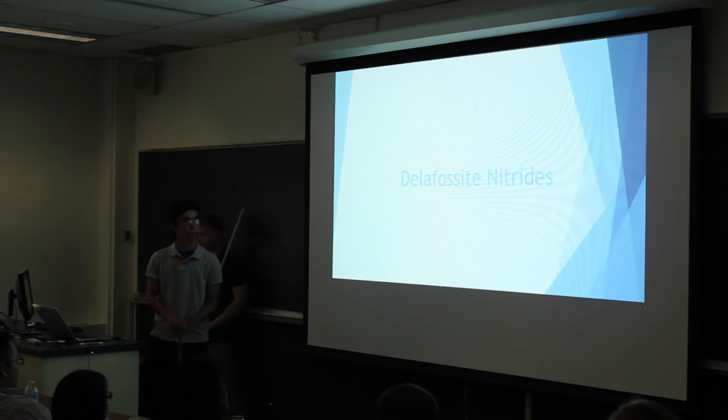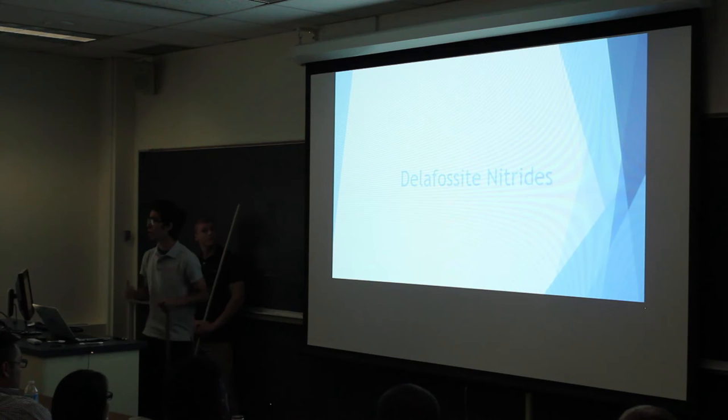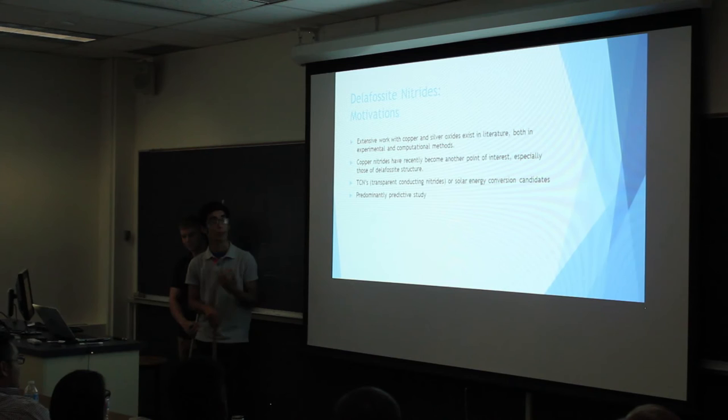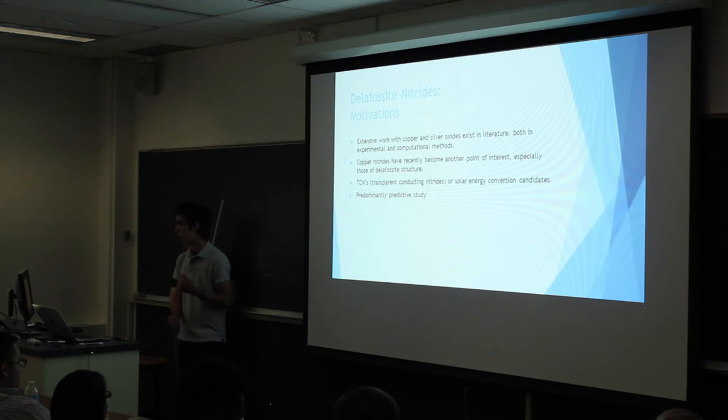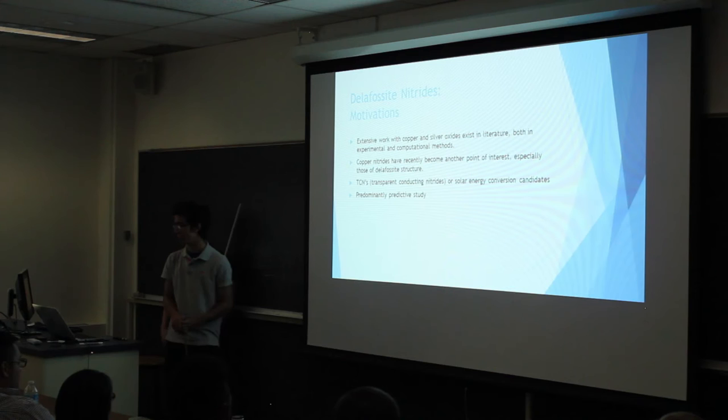I'm going to talk a little bit about the project that I'm working on. I'm working with delafossite nitrides, more specifically delafossite nitrides with noble metals — copper, silver, and gold. Just some motivations: there exists extensive work with copper and silver oxides in the literature, both in experimental and computational methods. Recently, copper nitrides have become another point of interest, especially in the delafossite structure. Some possible applications in the literature include a possible use for these materials in photovoltaics, specifically as transparent conducting nitrides or solar energy converters.